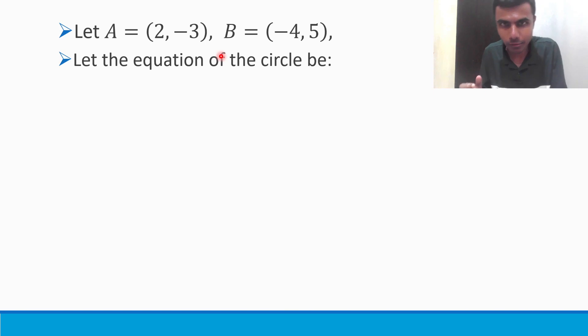First take the given two points as A and B. Our first point is A, second point is B. Next, let us take the equation of circle as x² + y² + 2gx + 2fy + c = 0. Standard form. Now my target is to find out g, f, c. Once that is done, my circle is there with me. So my purpose is to do that.